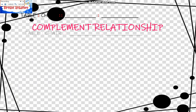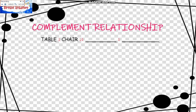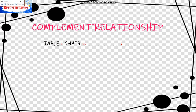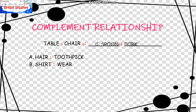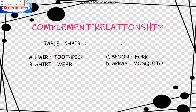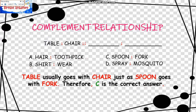Complement Relationship. The example is: Table is to Chair as blank is to blank. The choices are: Hair is to Toothpick; Shirt is to Wear; Spoon is to Fork; and Spray is to Mosquito. Table usually goes with Chair just as Spoon goes with Fork. Therefore, C is the correct answer.